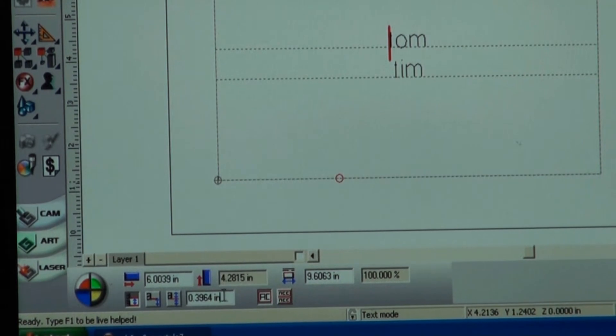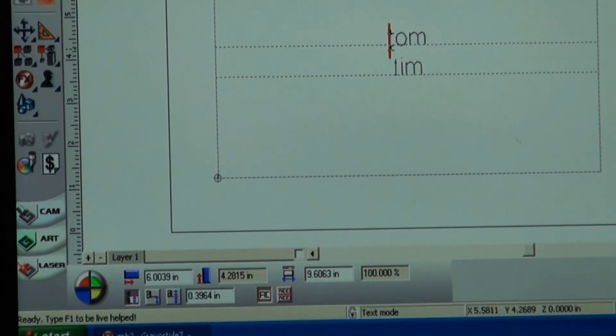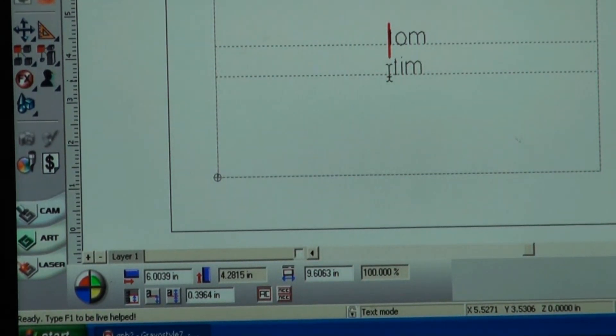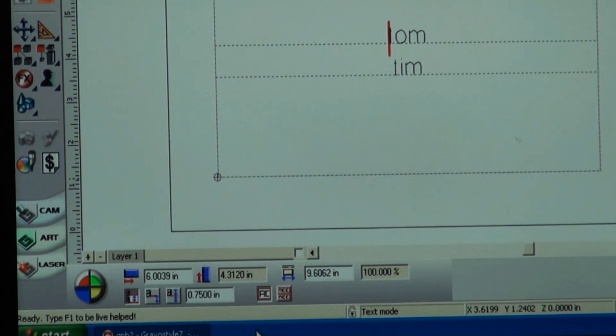So in our instance, it's 0.3694. So this first line is 0.3964 inches away. If I wanted to change that, I can just click in there. Say I wanted to make it three-quarters of an inch. When I click on that, it's going to change it to three-quarters of an inch.